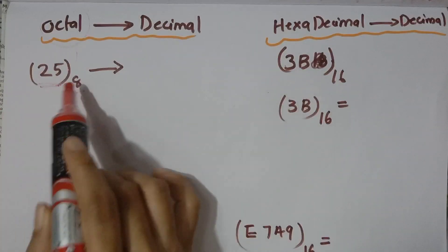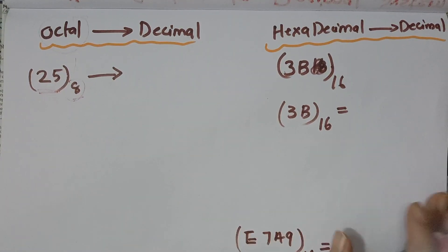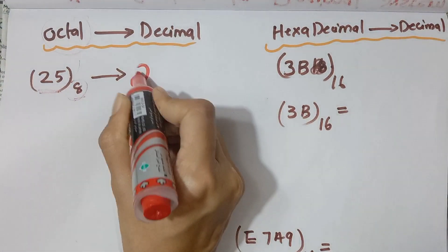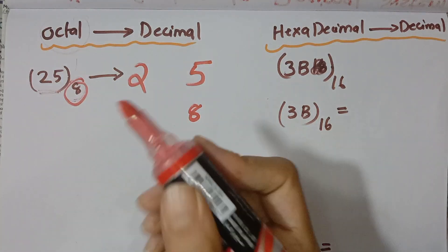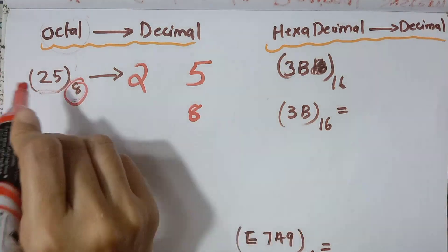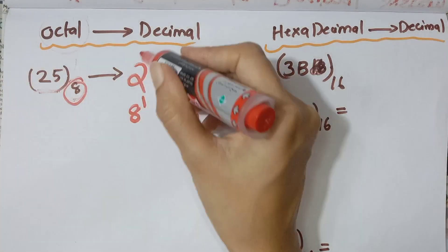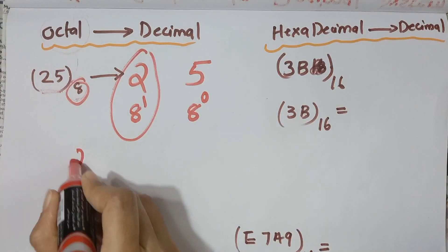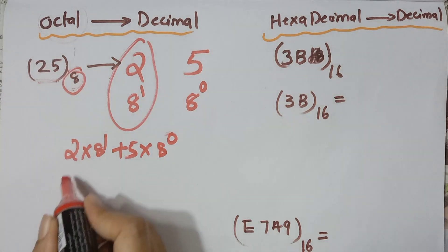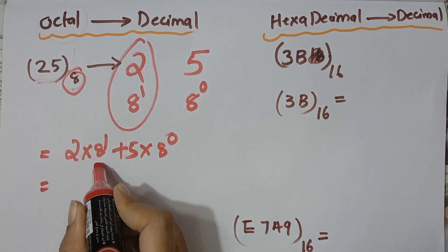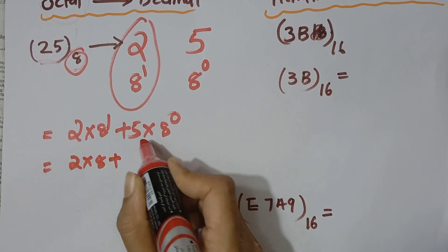Now we convert an octal value. Octal 25, base 8. The octal system means base 8. We expand using positional values: 2 into 8 raised to 1, plus 5 into 8 raised to 0.